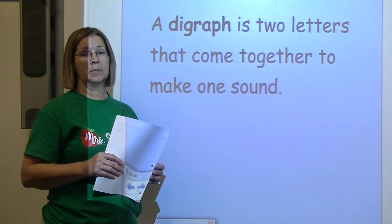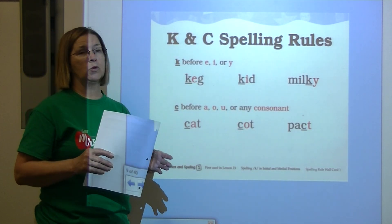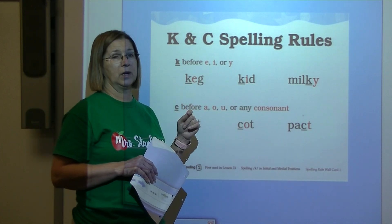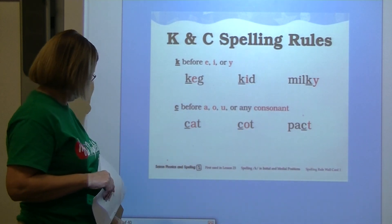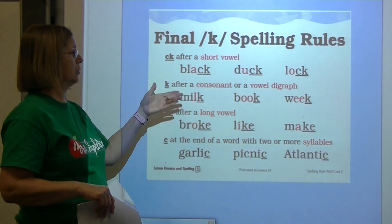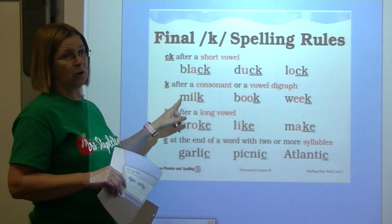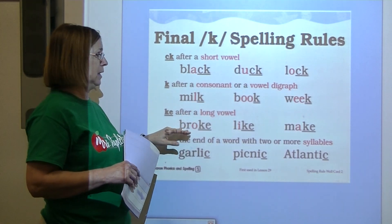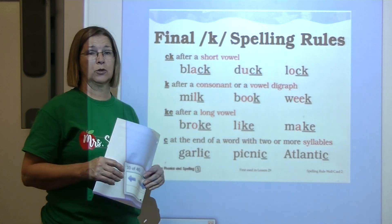A digraph is two letters that come together to make one sound. When we're trying to spell a word with the k sound: we use k before e, i, or y; c comes before a, o, u, or any consonant. When spelling k at the end of a word: use digraph ck after a short vowel, plain k after a consonant or vowel digraph, ke after a long vowel, and c at the end of a word with two or more syllables.